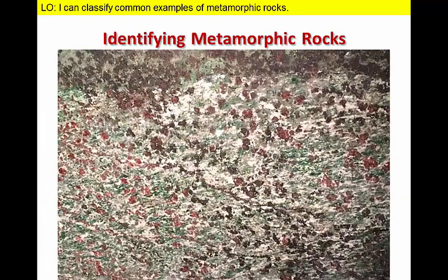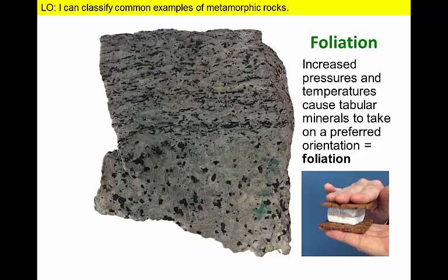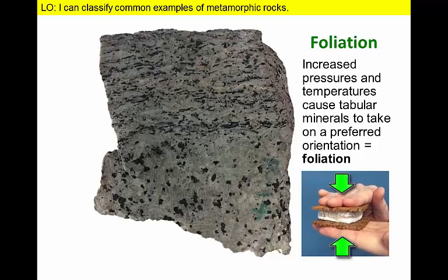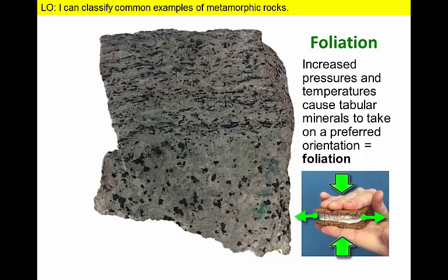So how do we recognize metamorphic rocks? First, many metamorphic rocks contain tabular or sheet-like minerals that are either physically rotated or grow so that they are perpendicular to the direction of pressure or tectonic stress. For example, imagine squeezing a balloon or a marshmallow — either one will expand in the flattened direction, perpendicular to stress. Minerals in some metamorphic rocks do essentially the same thing. This process creates an alignment of minerals known as a foliation.